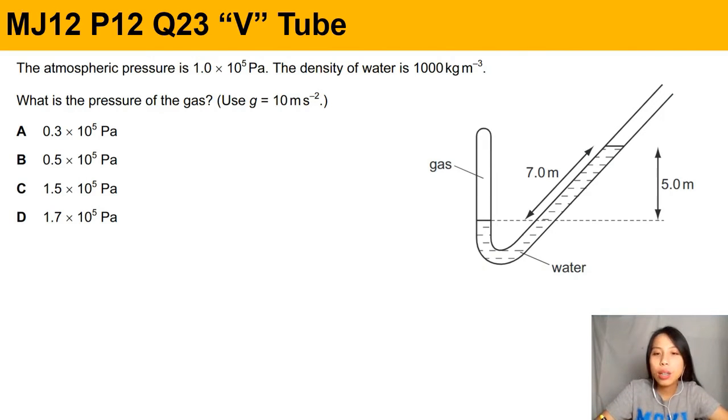The V tube here, one side is closed and the other side is open. So remember I talked about in the simulation, the left side must equal to the right side. The liquid's not moving means the pressure on the left part of the tube equals to the pressure on the right part.